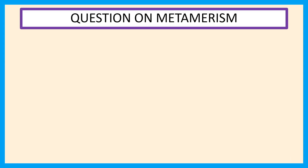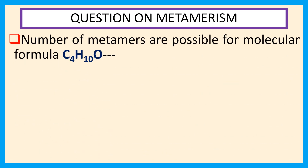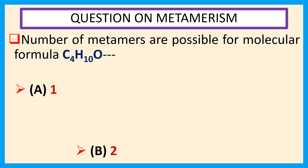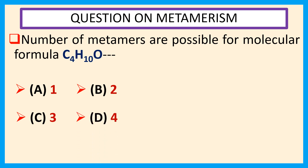Welcome everyone. This is a question on metamerism. How many metamers are possible for molecular formula C4H10O? The choices are: A) 1, B) 2, C) 3, D) 4.